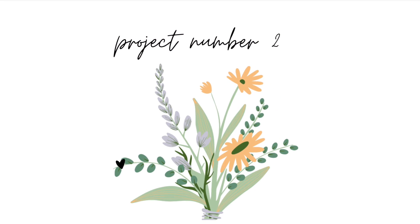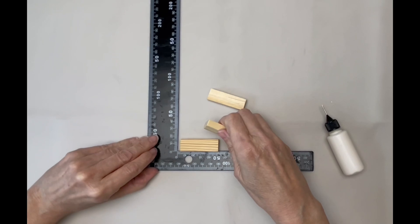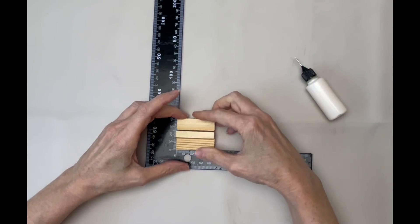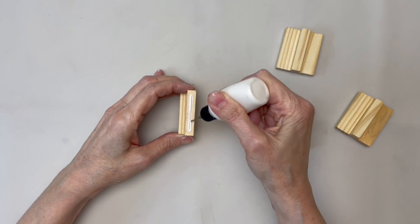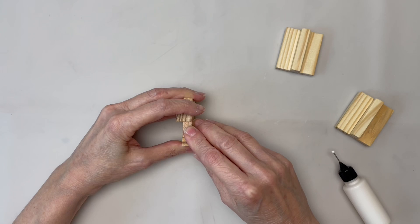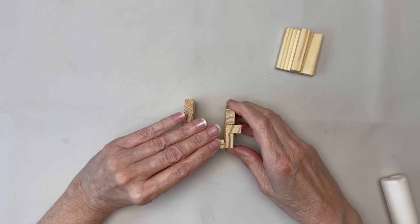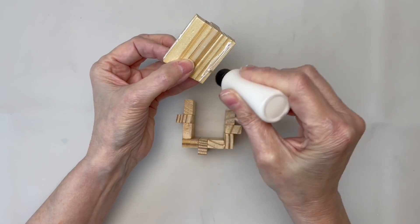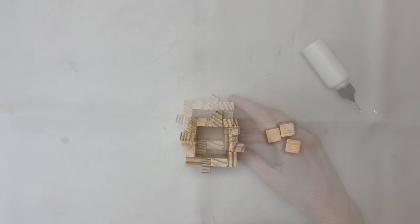Our second project will be some tea light holders to match the lantern. You're going to start, well, you're going to need 48 blocks total, and you're going to glue the blocks the same way you did the others. But you're going to need four of these block sets for each one of the little tea light holders. Here I am making all of them. And this is how you glue them together. You want to glue them into a square.